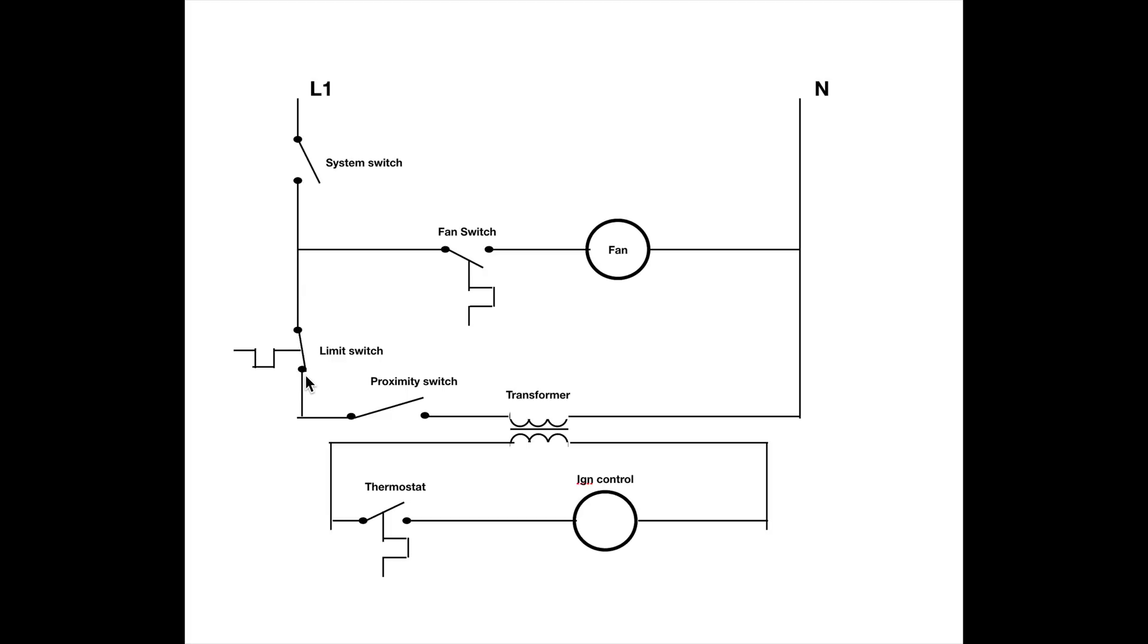I got a limit switch here. Now, the limit switch all it really does is shut off the transformer here which shuts off the entire low voltage for the ignition control. So the power goes through the limit switch, if the proximity switch is closed, meaning someone's out there, that's going to energize the transformer and the transformer is going to be able to send power through the thermostat and if it's closed, if it's cold enough out there, then it sends power to the ignition control.